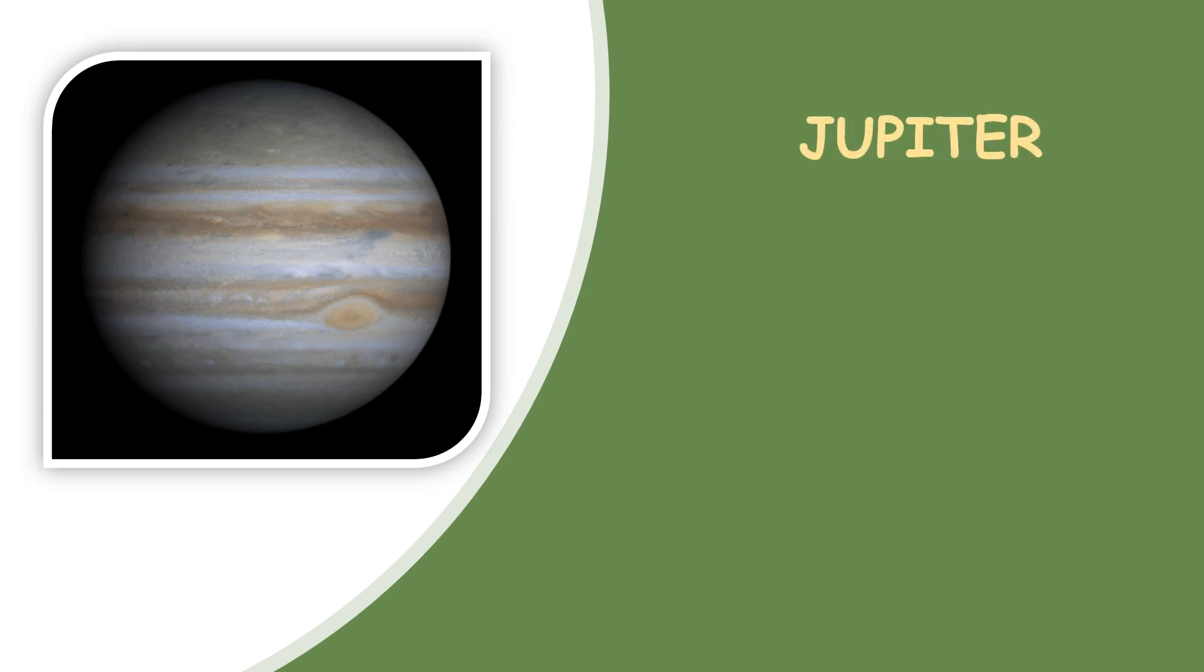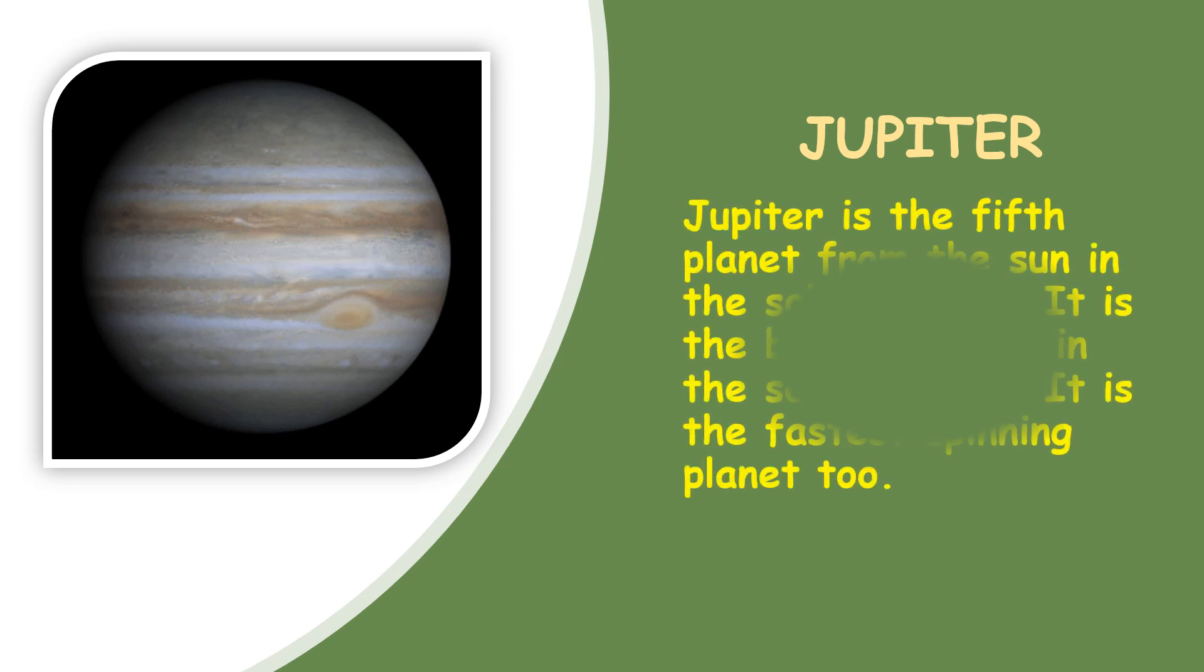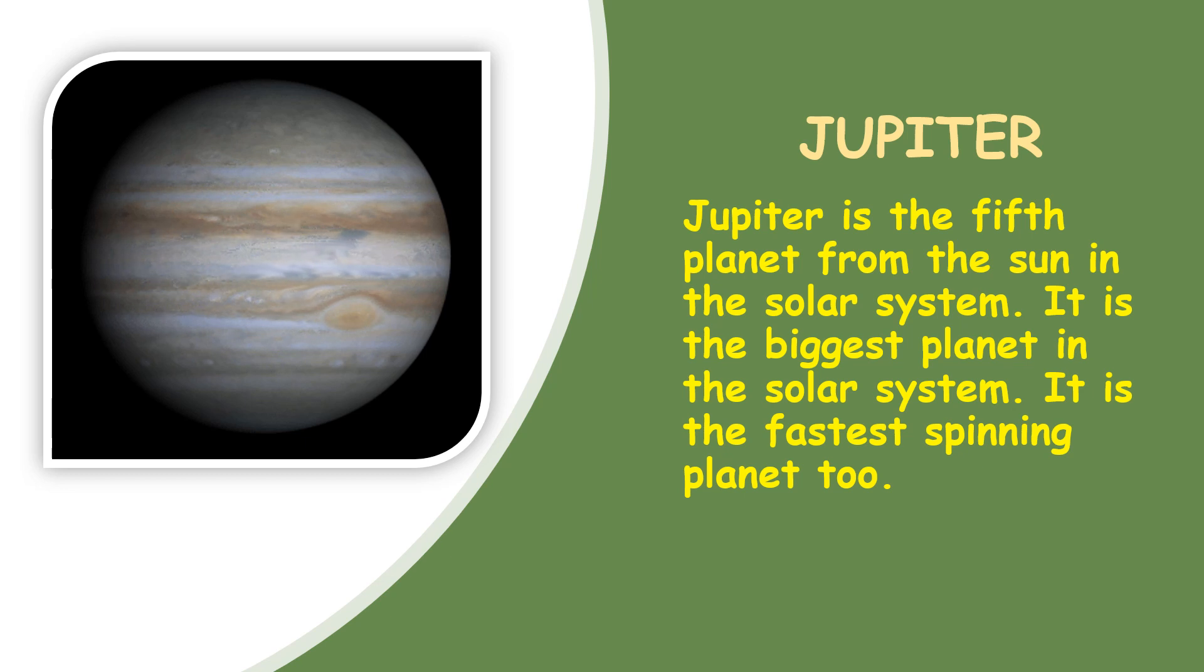Can you look at that and tell me which planet is that? Yes, you are right. It is Jupiter. Jupiter is the fifth planet from the Sun in the Solar System. It is the biggest planet in the Solar System. It is the fastest spinning planet too.